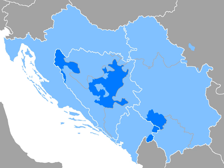Until the dissolution of SFR Yugoslavia, they were treated as a unitary Serbo-Croatian language, and that term is still used in English to subsume the common base vocabulary, grammar and syntax of what are today officially four national standards, although this term is controversial for native speakers, and paraphrases such as 'Serbo-Croato-Bosnian' (SCB) or 'Bosnian-Croatian-Serbian' (BCS) are therefore sometimes used instead, especially in diplomatic circles.